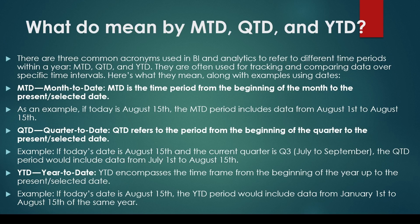QTD means quarter till date, spanning from the start of the quarter to the specified date or today. In this scenario, on August 15th, QTD would extend from July 1st to August 15th, considering the quarter runs from July to September — the standard quarter.